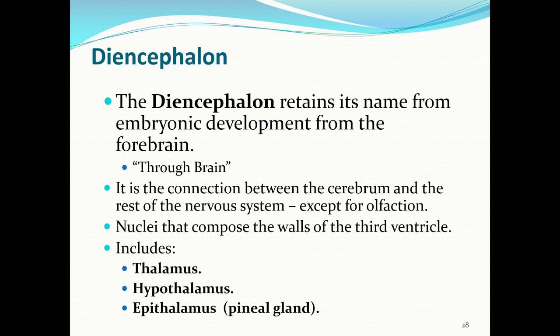The diencephalon retains its name from embryonic development — from what is called the forebrain. 'Dia' means through or complete, so it basically means the 'through brain,' centered in the middle of the brain adjoining the two cerebral hemispheres. It is the connection between the cerebrum and the rest of the nervous system except for olfaction. Its nuclei compose the walls of the third ventricle. The diencephalon includes the thalamus, the hypothalamus, and the epithalamus (also known as the pineal gland because it looks like a little pine cone).